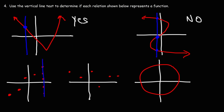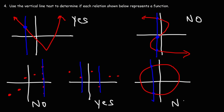For the third relation, no matter where we draw the vertical line, it only touches the graph at one point — so this relation is a function. For the circle, drawing a vertical line produces two points of intersection. The circle does not pass the vertical line test, so it does not represent a function. In order to pass the vertical line test, the graph must touch the line at only one point.